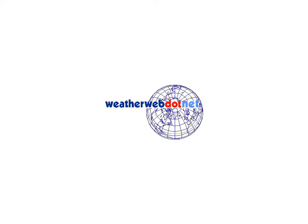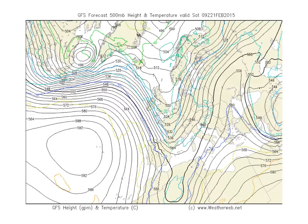Hi everyone, it's Simon Keeling here at weatherweb.net and it is Saturday the 21st of February. Thanks again for watching. Now lots of you have been emailing to ask me what I mean when we talk about troughs and ridges, so I thought today might be a good opportunity just to show you exactly what we mean.